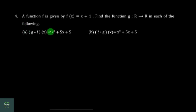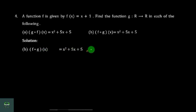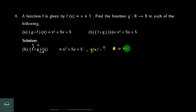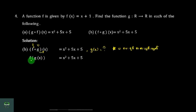Number four is the solution to be done. f of G of x equals x squared plus 5x plus 5. The solution is complete.